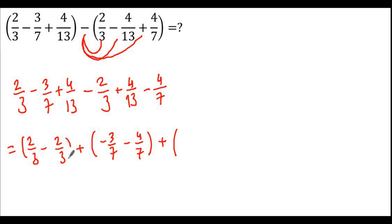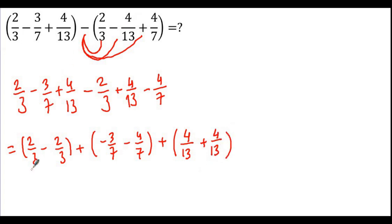Let me put the brackets in. Here we have the exact same fraction, so the result is going to be 0 — 2 minus 2 is 0, 0 over 3 is 0.